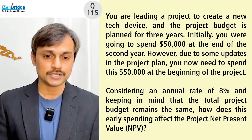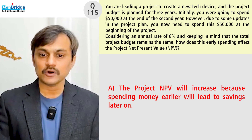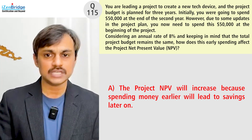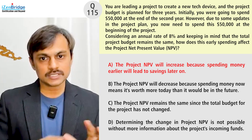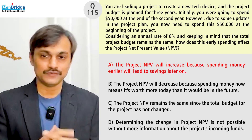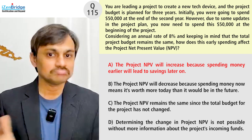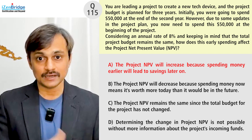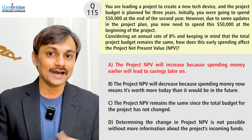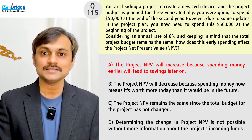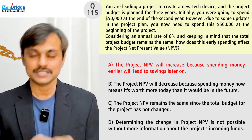Let's go through the options. Option A: the project NPV will increase because spending money earlier will lead to savings later on. The spending more or less remains the same — no impact there. We need to spend earlier or later, but there's no saving coming in. Early spending is not saving — it is more expense. It's the reverse.